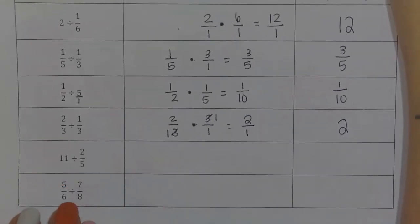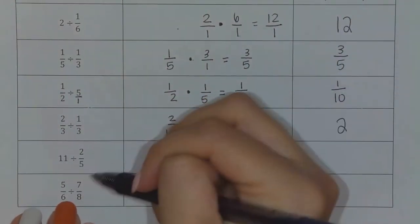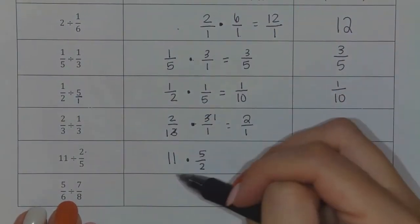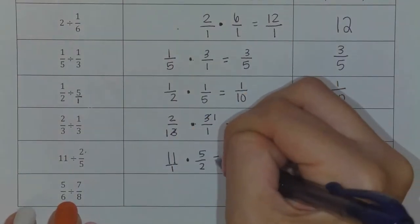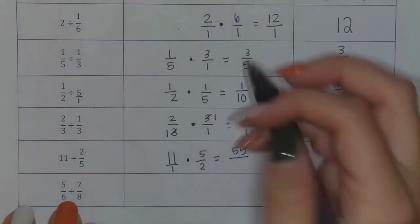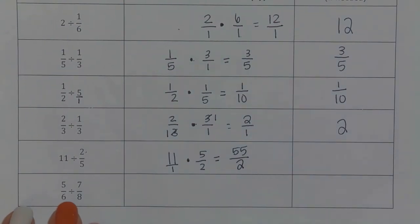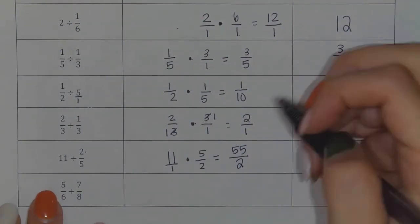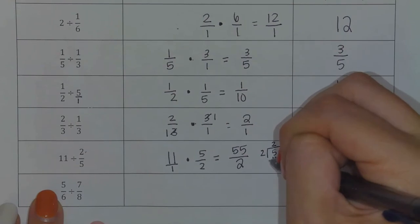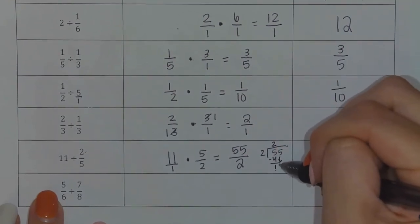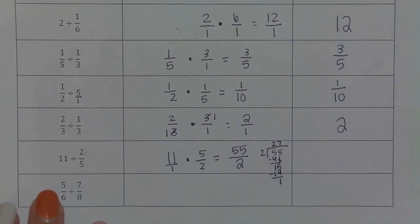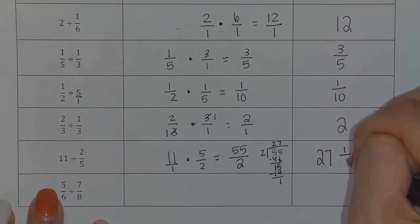I have 11 divided by two-fifths. Flip the second fraction to be five-halves and change it to a multiplication. So 11 has a denominator of one. Eleven times five gives me 55, and one times two gives me two. This is an improper fraction, so I need to turn it into a mixed number. Two goes into 55 — two goes into five two times, subtract to get one, bring down the five, two goes into 15 seven times with one left over — giving me 27 and one-half.